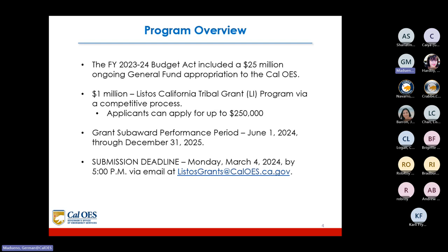Applicants can apply for up to $250,000 grant sub-award. The performance period runs June 1, 2024 through December 31, 2025. The submission deadline is Monday, March 4, 2024, by 5 p.m. via email at listosgrants@caloes.ca.gov.